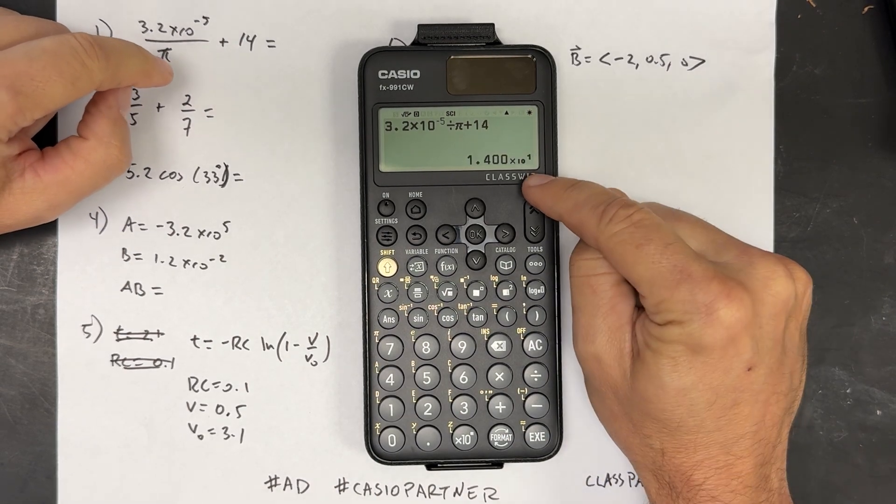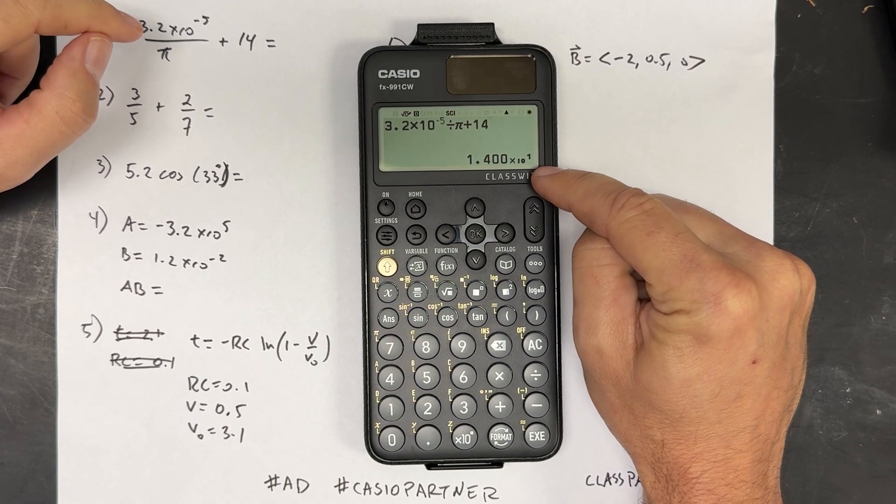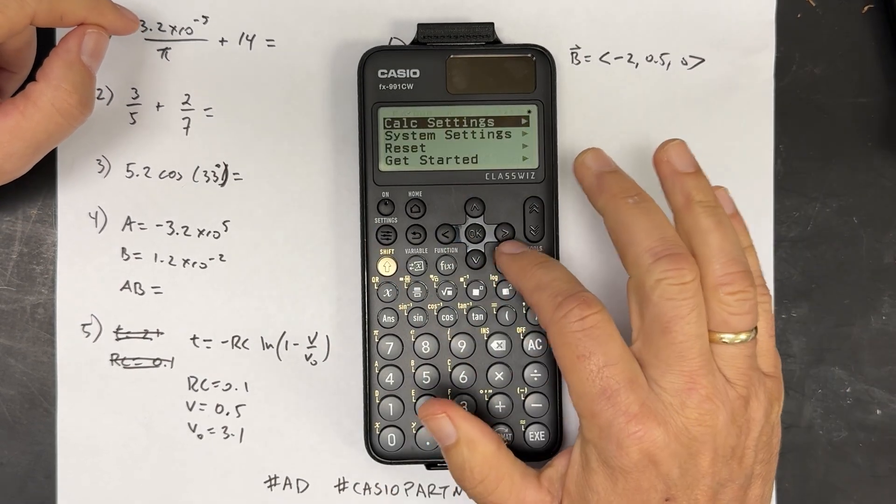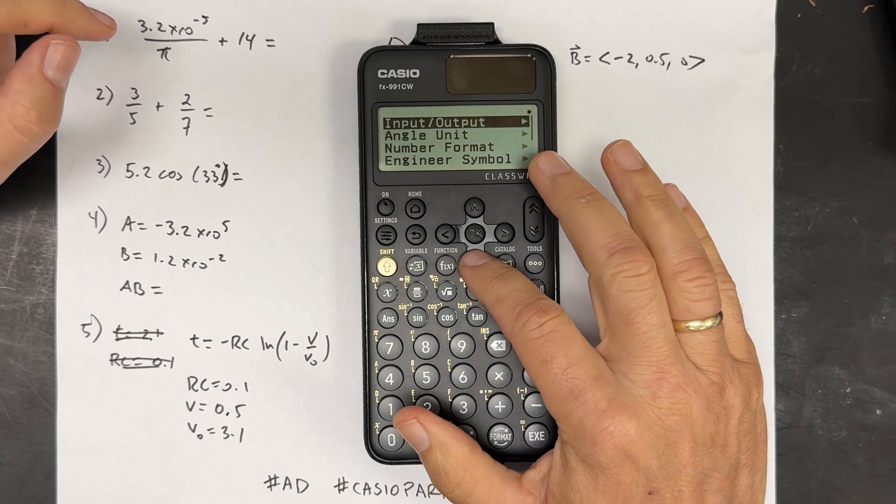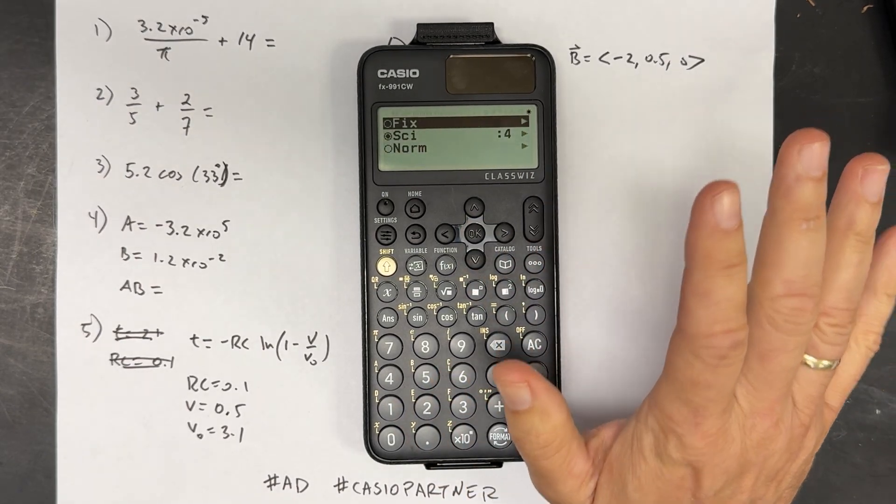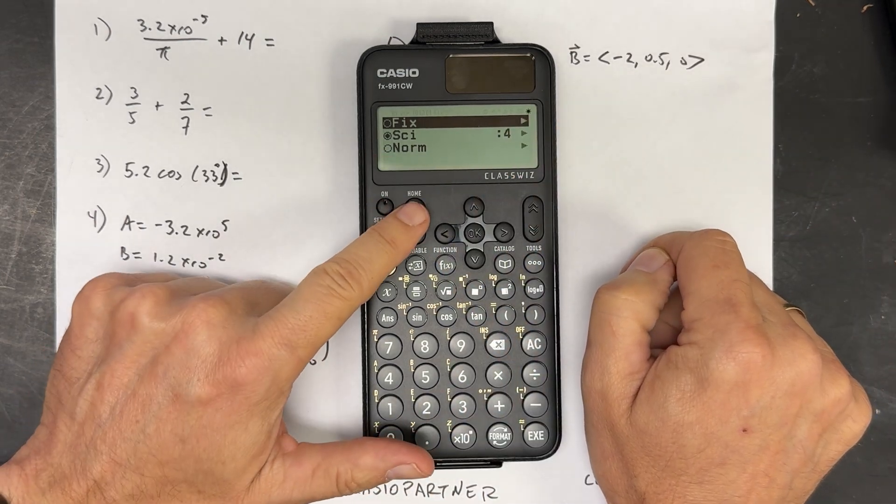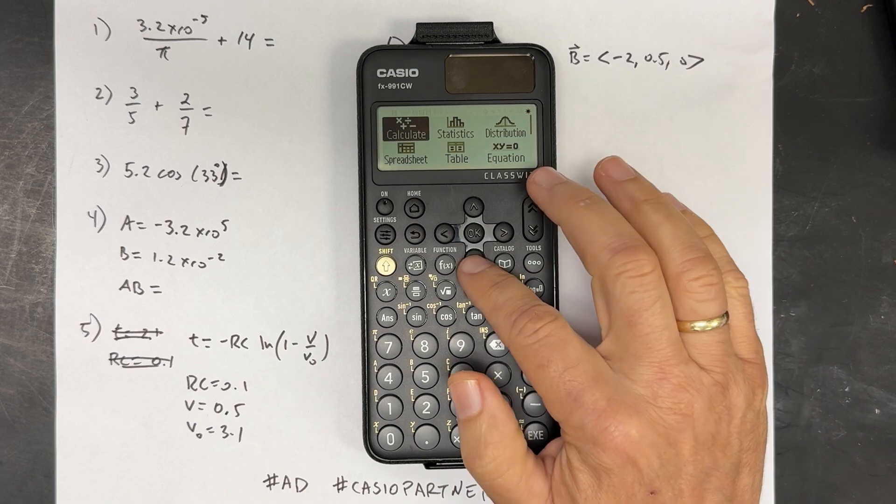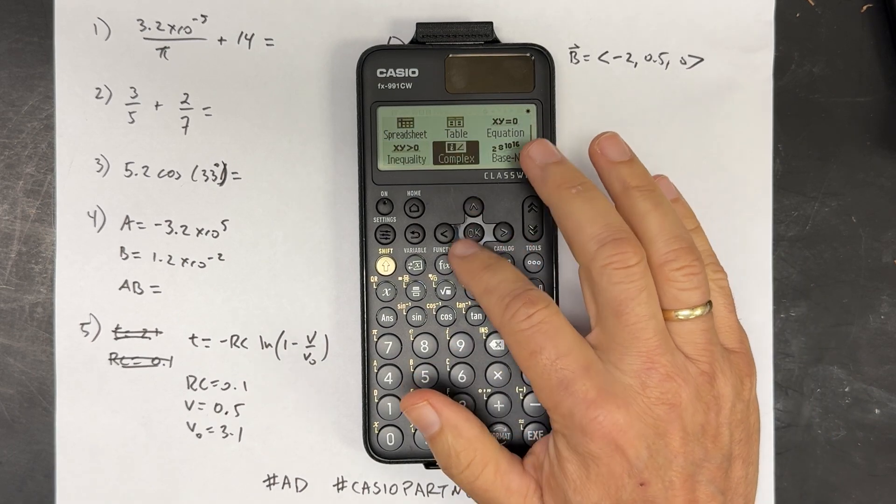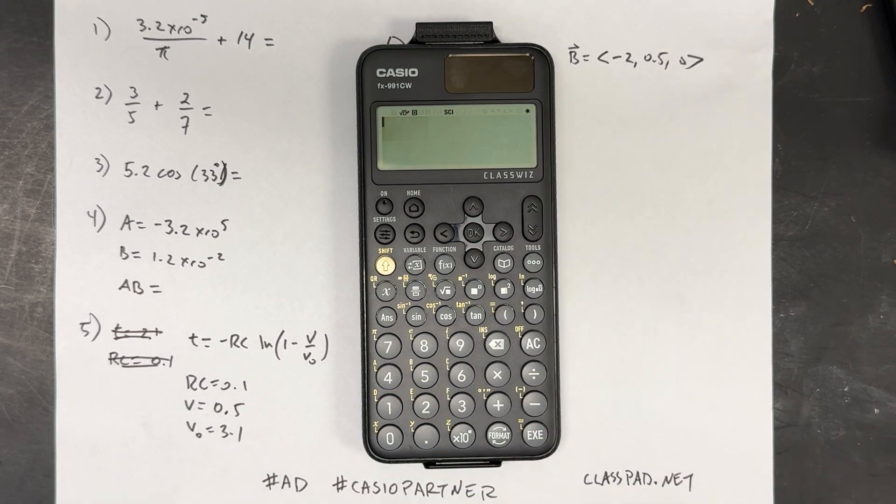And there's your number. Now I have this displaying in scientific notation. That's an option you can do under settings. You can go to calc settings, number format, and then you can change the way you like it. That's the way I like it, so that's the way I'm going to use it. If you need to get back, the home button will take you here with all the different apps. We'll use this vector in a little bit, but you just want normal calculate for now.